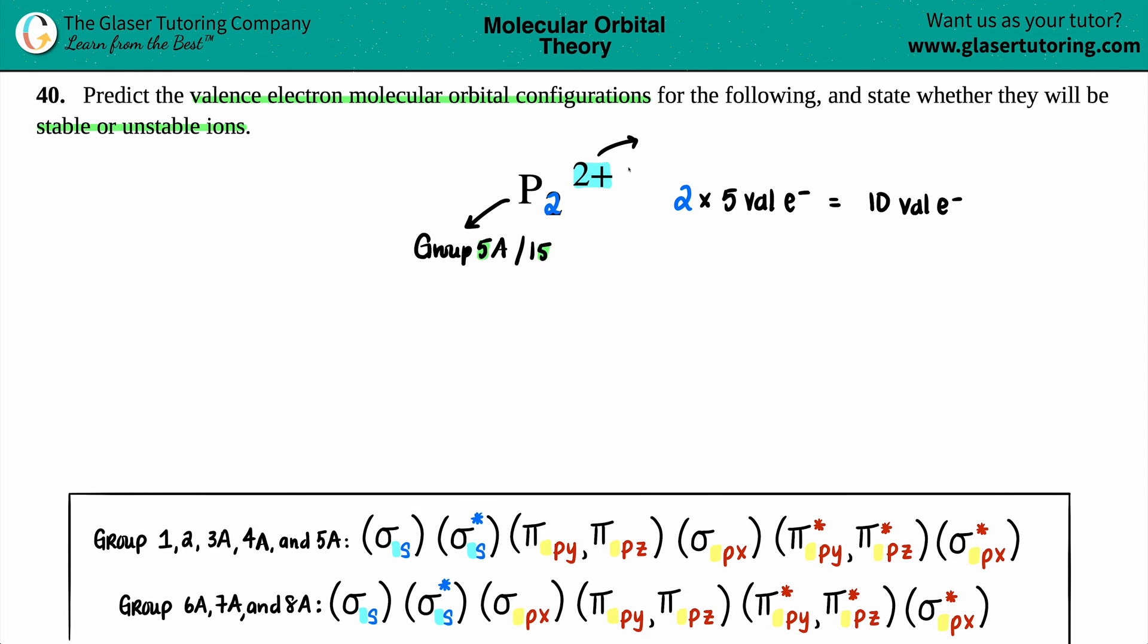Remember, in chemistry, plus actually means that you lose electrons. So in this case, you lost 2 electrons. So I'm going to take my 10 and deduct 2 electrons from it. So 10 minus 2 is now a total of 8 valence electrons, which we will be using in a little bit. So that's the first part.